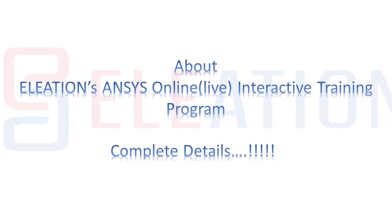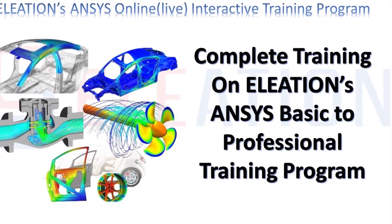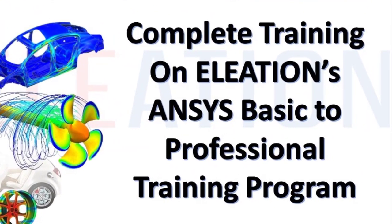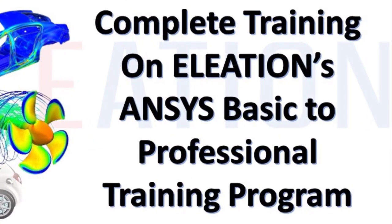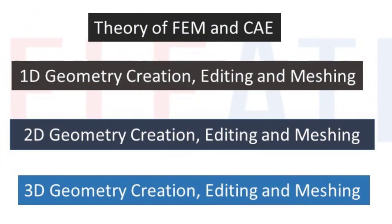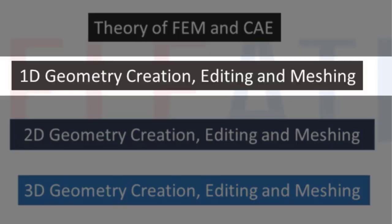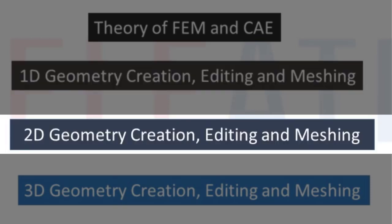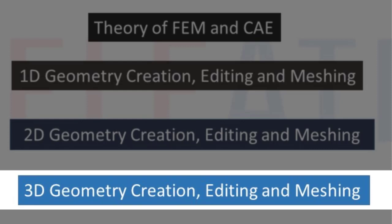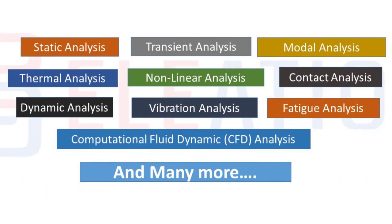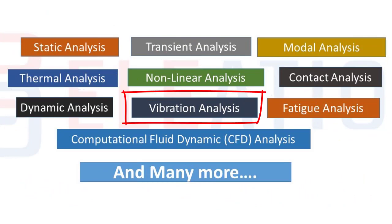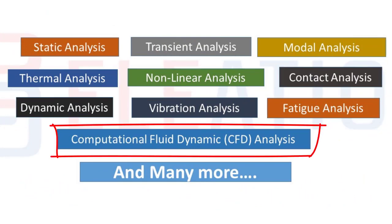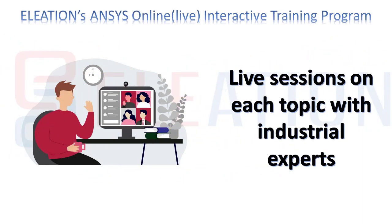Aliation's Ansys basic to professional training program includes complete training starting from basic topics all the way to professional concepts as per industry standards. Topics covered include theory of FEM and CAE, 1D, 2D, and 3D geometry creation, editing and meshing, static, transient, modal, thermal, nonlinear, contact, dynamic, vibration, fatigue, and CFD analysis, and many more.